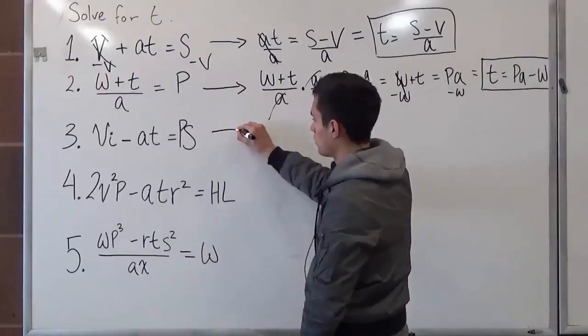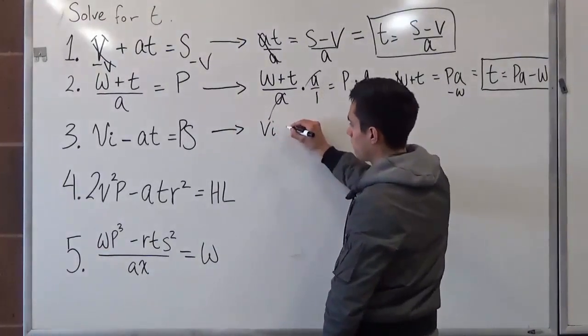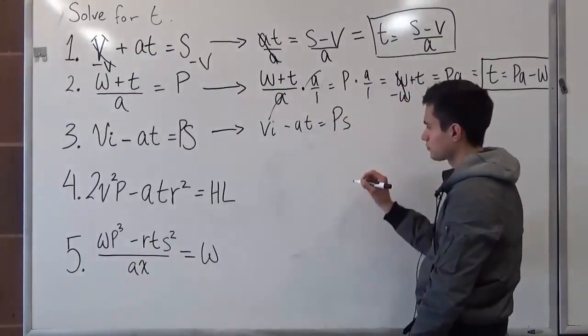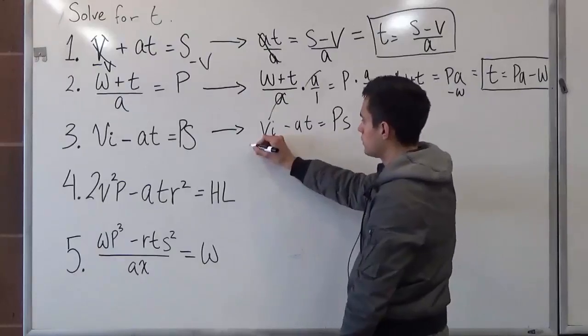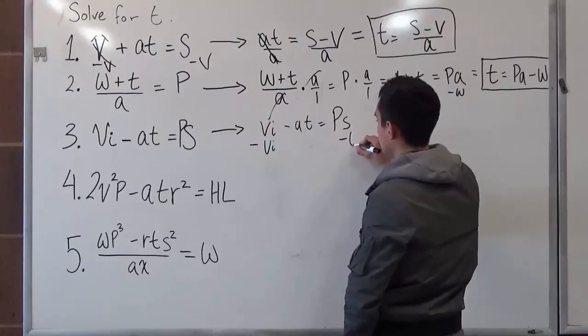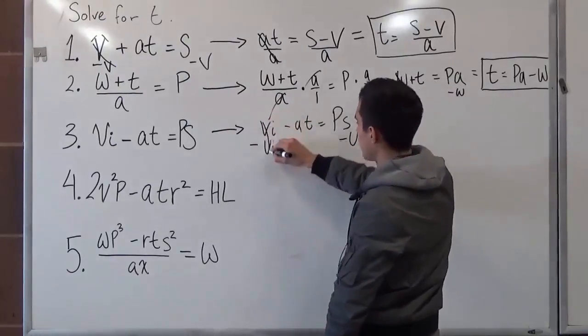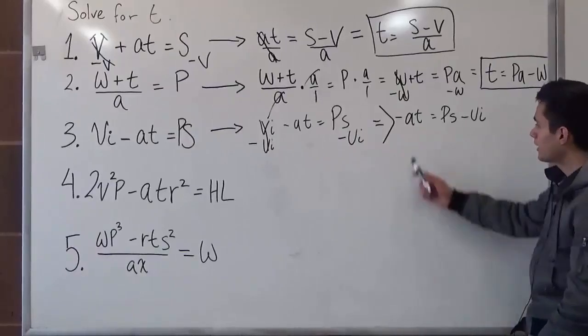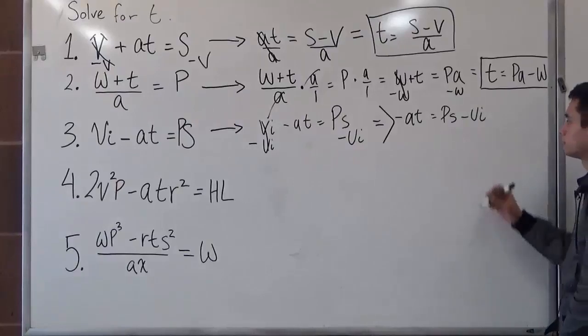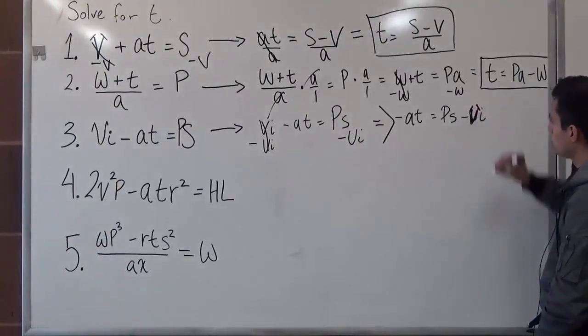So in other words, it can be written as v i minus a t is equal to p s minus v i minus v i. So v i cancels out. So now we have negative a times t is equal to p times s minus v times i. It looks a little bit like a u, but we're just going to put a v. All right.